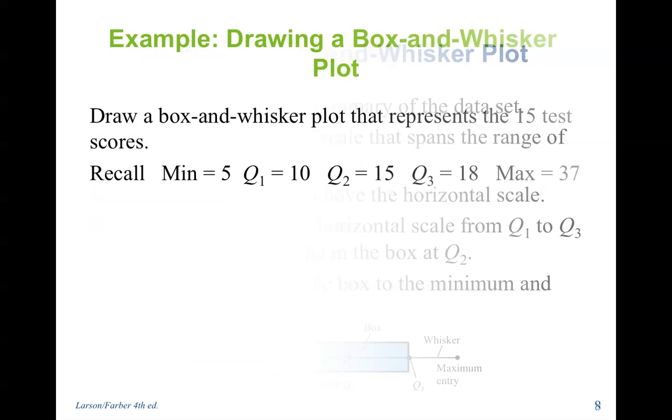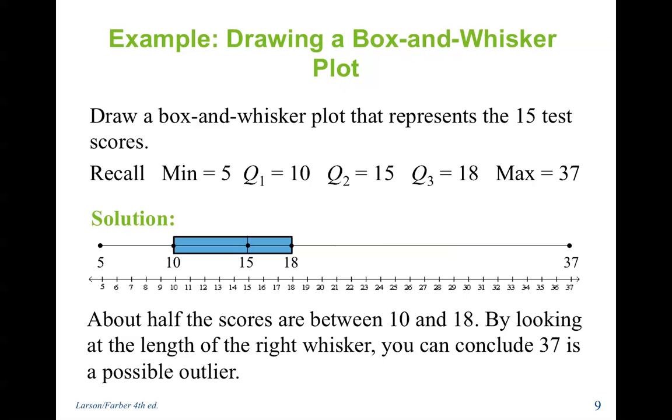So for our example, here is the box and whisker plot. About half of the scores are between 10 and 18. We know that this is one fourth, one fourth, one fourth, and one fourth, so I can use these two fourths to say half is in here. Notice my minimum value is 5, Q1 is 10, Q2 is 15, Q3 is 18, and the max is 37. So I simply draw a whisker from 5 to 10, a line continuing from 10 to 15, another line continuing from 15 to 18, and then a whisker from 18 to 37. Then I draw a box from Q1 to Q3, or in our case 10 to 18. I also want a vertical line at 15, and this gives me a lot of information about our data set, much more than just the data arranged in numerical form.